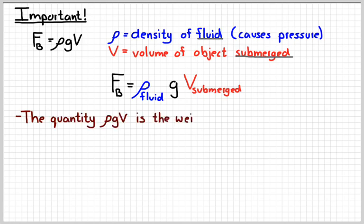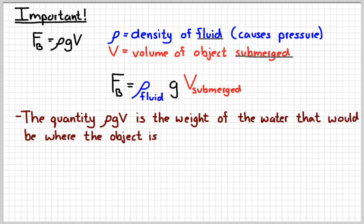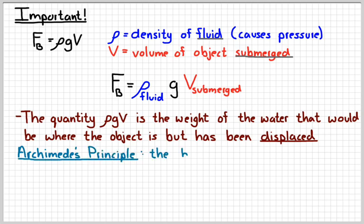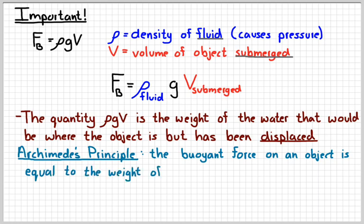The quantity ρgV, you may recognize from our last lesson, is basically a weight. It's a mass times g because ρ times volume is mass. So the density of the fluid times g times a submerged volume is the weight of the water that would have been there, where the object is, but has been displaced. So the object moves some water out of the way. The weight of that water equals the buoyant force. That's typically how Archimedes' principle is stated. The buoyant force is equal to the weight of the displaced water, or fluid in general.